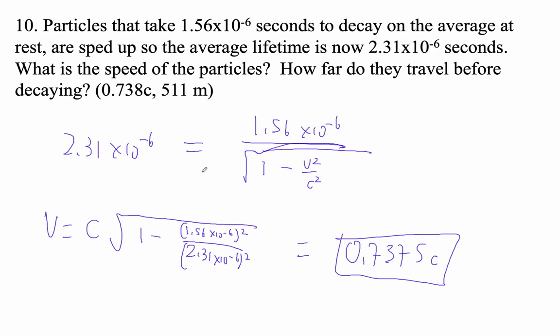Okay, how far do they travel before decaying? Well, we're going to see them, if we watch these particles, right? This is the actual time that they take to decay because they are moving. So the distance that they travel is going to be the velocity times the time. And the velocity is 0.738 times the speed of light, 3.00 times 10 to the 8 meters per second.